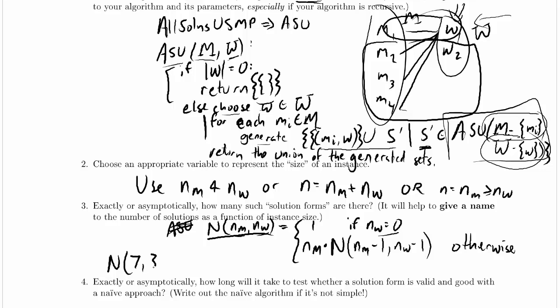Well that's going to be equal to 7 times the recursive call n of 6,2, which is equal to 7 times 6 times n of 5,1. And that's 7 times 6 times 5 times n of 4,0. And that's 7 times 6 times 5 times 1.